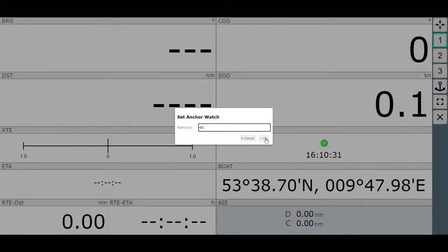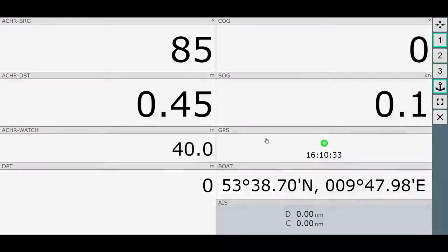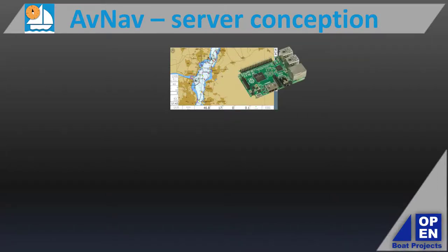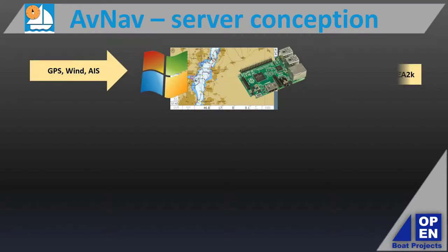AvNav convinced me with its unique concept of having a server for the program and the well-executed implementation. The basis of AvNav can be installed on a Windows operating system or a Raspberry Pi, on which all required data such as the nautical charts are kept and provided.